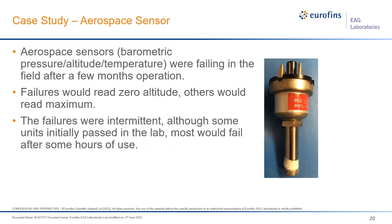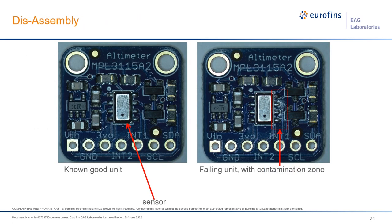This is Dan Sullivan talking about the case study of the aero sensor. We had an aerospace sensor that measured pressure, altitude, and temperature, and it was failing in the field after a few months of operation. Some failures would read zero altitude, others would read maximum. There were also intermittent failures that would come and go, and units that initially passed in the lab would fail after some hours of usage. When we disassembled the units, comparing a known good unit with a failing field unit, we could immediately see some sort of contamination or discoloration zone on the failing unit, so we decided to investigate further.